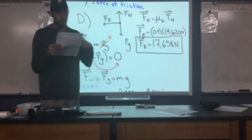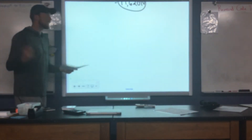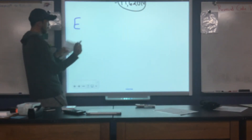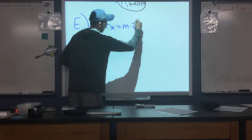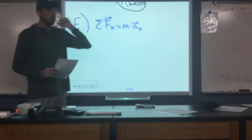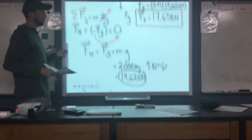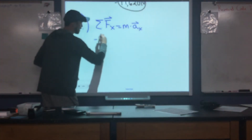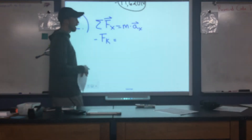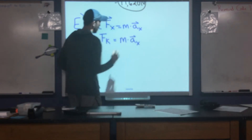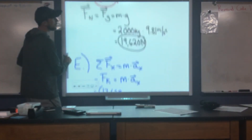Now that we have our force of friction, the problem wants us to find the acceleration of the cars together. Looking at the sum of forces in the x-direction: the only force is friction, which is to the left — so negative. Negative 17,658 equals total mass times acceleration. The problem tells us to use the mass of the two-car wreck: 2,000 + 2,500 = 4,500 kilograms. Dividing: acceleration in x = −17,658 ÷ 4,500 ≈ −3.92 meters per second squared.